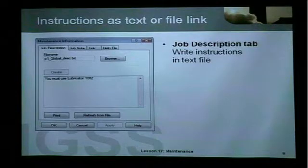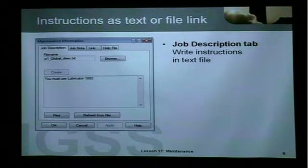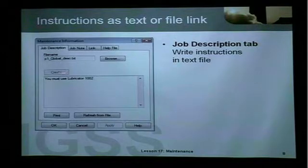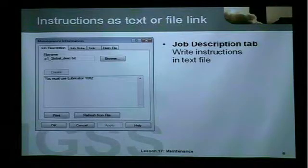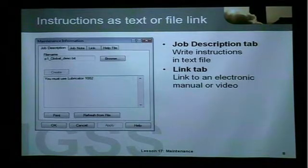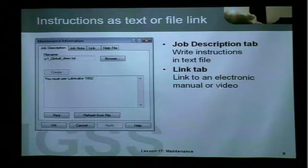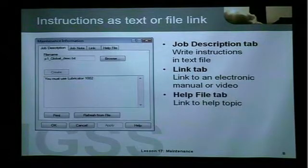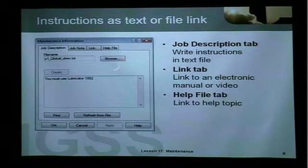When I move into Maintenance Information — the place where you can provide instructions to the operator — I can create textual instructions, such as: you must use lubricator 1002. I can also provide a link to an electronic manual or video, such as a PDF file or an AV file from the process component manufacturer, or a link to a help file. So the operator will have all these options for looking at instructions for the job.